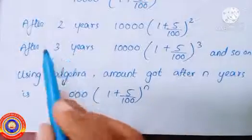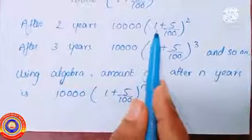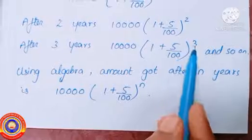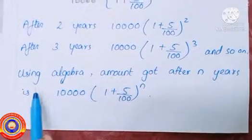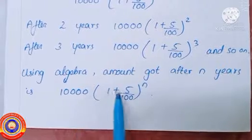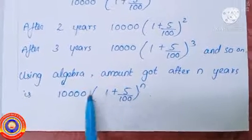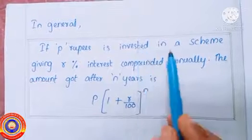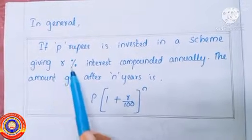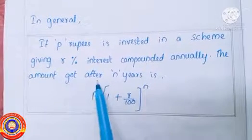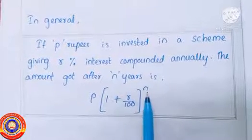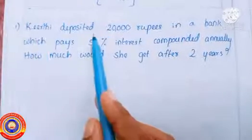Like this we can find the other years also. After two years: ten thousand into one plus five by hundred, the whole raised to two. After three years: ten thousand into one plus five by hundred, the whole raised to three, and so on. In general, the amount after n years is ten thousand into one plus five by hundred, the whole raised to n. In general, if P rupees is invested in a scheme giving r percent interest compounded annually, the amount after n years is P into one plus r by hundred, the whole raised to n.